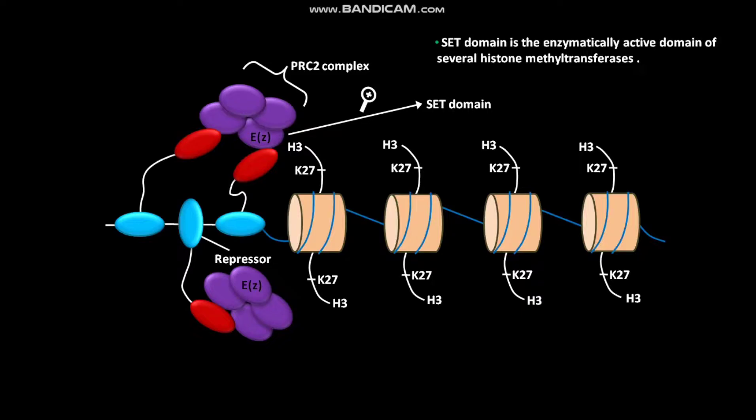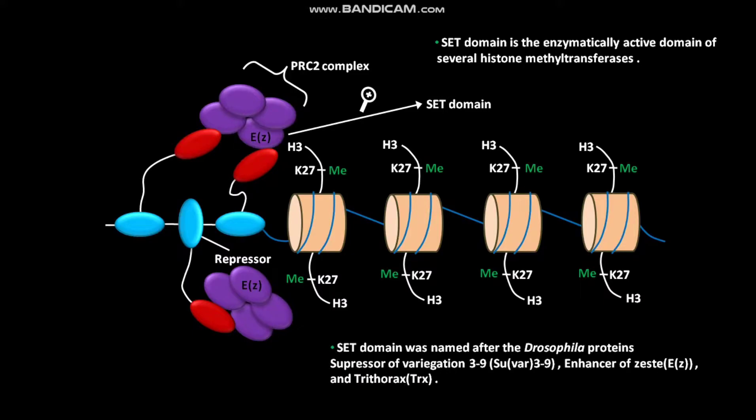The association of repressor with PRC2 complex results in methylation of neighboring nucleosomes on histone H3-lysine-27 or K27 by the SET domain. SET domain was named after the Drosophila proteins: